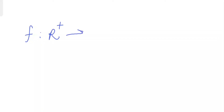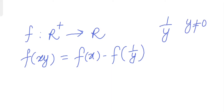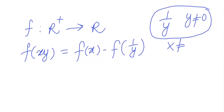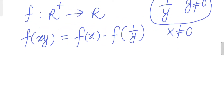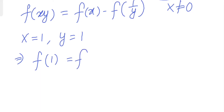So let's write the equation. f is defined and its domain is real numbers. f of xy equals f of x minus f of 1 over y. Because 1 over y is there, obviously y is not equal to 0, and x is also not equal to 0 because of the domain. So let's take x equals 1 and y equals 1 and see what happens. We get f of 1 equals f of 1 minus f of 1, so f of 1 equals 0.